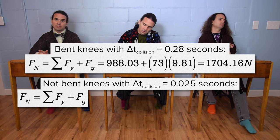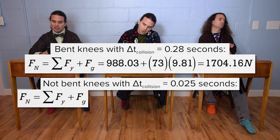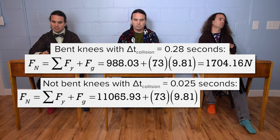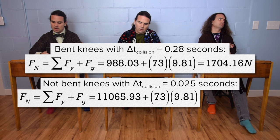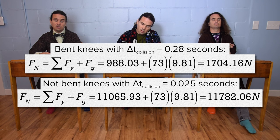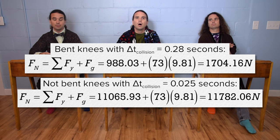And when we pretended you did not bend your knees, it is 11,065.93 plus 73 times 9.81, which is 11,782.06 newtons.